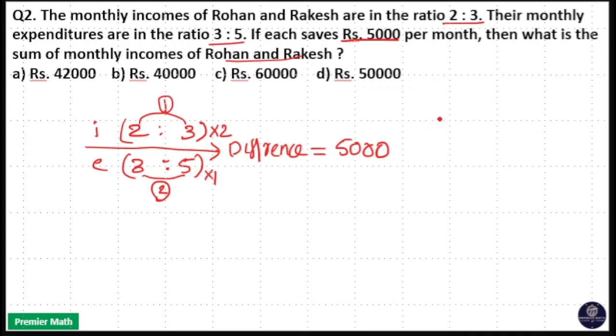That means 2×2 is 4, and 3×2 is 6, giving us 4:6 for income. 3×1 is 3, and 5×1 is 5, giving us 3:5 for expenditure. The difference between 4 and 3, and between 6 and 5, equals 1 unit. 1 unit equals Rs. 5000.